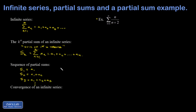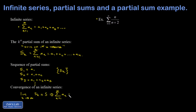The partial sums form their own sequence, which we can call {s_k}. When does an infinite series converge? If we keep adding one more term each time and that process settles down to some finite number, it's sensible to call that the sum of the series. In limit notation: if the limit of the sequence of partial sums equals some number s, then s is what we call the sum of the series.